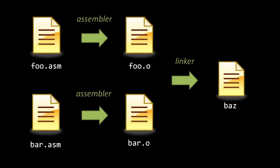A linker is so named because it must resolve the links in code between the object files. Though we may write our code in separate source files, the code of our program is interdependent, such that code in one source file may invoke code written in another. For example, in foo, we might invoke a function defined in bar, but because the source files are assembled independently, the assembler can't know the actual address of the function in bar when assembling foo. What the assembler does then is leave a stub address where the function is invoked. Later, the linker will fill in these stubs with actual addresses.